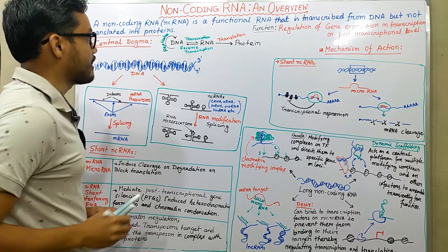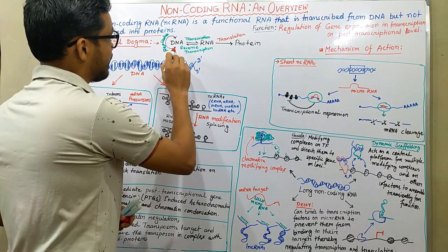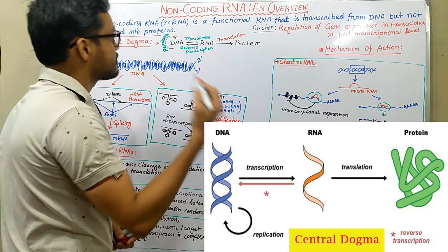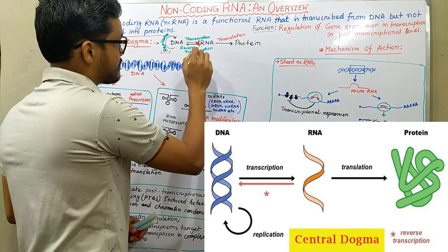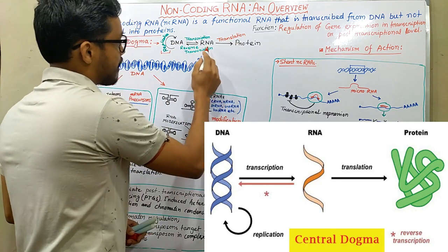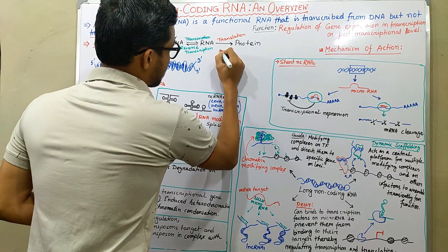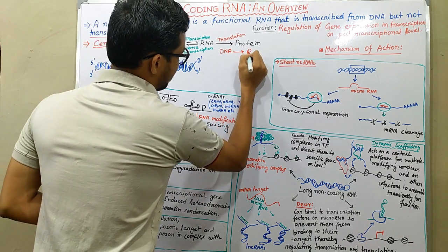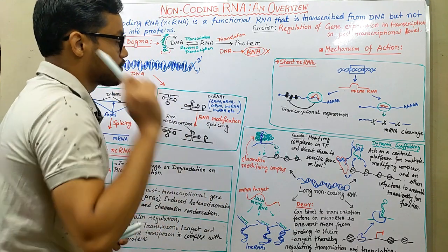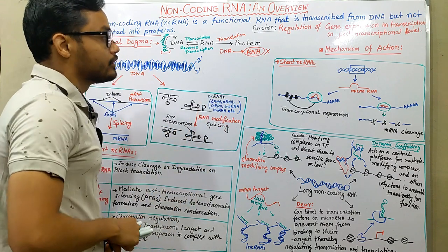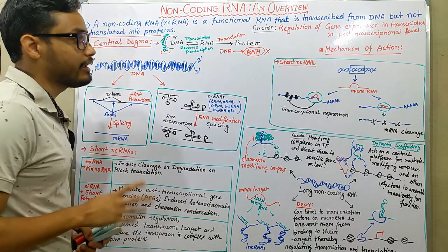If we observe the central dogma: when DNA makes DNA, this process is known as replication; from DNA to RNA it is transcription; RNA to protein is translation; and RNA to DNA is reverse transcription. In the case of non-coding RNAs, DNA can successfully be transcribed into RNA, but those RNAs cannot produce a functional protein. Still, those RNAs are important to some special activities of our cells, and they are denoted as non-coding RNAs.